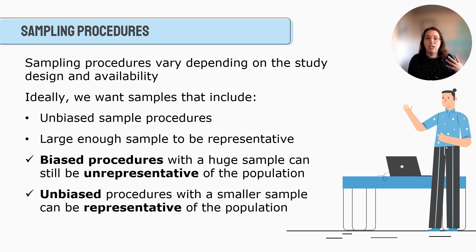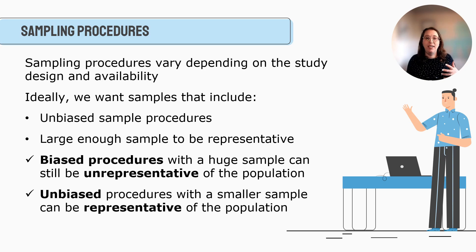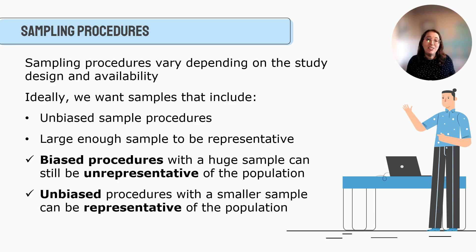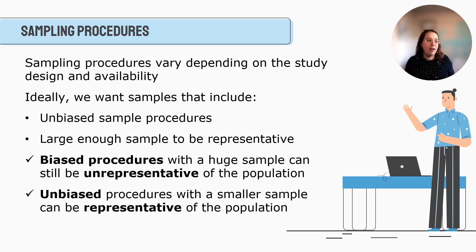Ideally we want samples that include unbiased sample procedures and a sample that's large enough to be representative. If I have a population of millions of college students across the country and I get a sample of only three college students, that's not really going to be large enough to help me understand the concept in relationship to all college students.